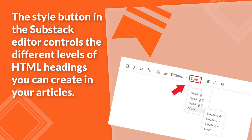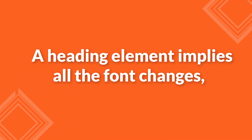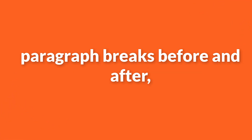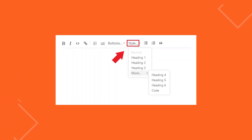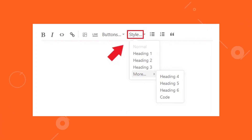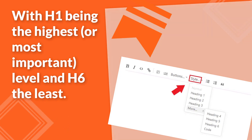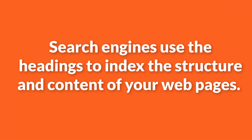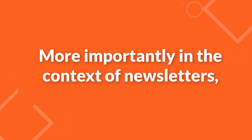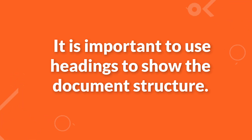Number 5: Text styles. The style button in the Substack editor controls the different levels of HTML headings you can create in your articles. HTML defines six levels of headings. A heading element implies all the font changes, paragraph breaks before and after, and any white space necessary to render the heading. The heading elements are H1, H2, H3, H4, H5, and H6, with H1 being the highest or most important level and H6 the least. Search engines use headings to index the structure and content of your web pages. In the context of newsletters, users often skim a page by its headings, so it is important to use headings to show the document structure.